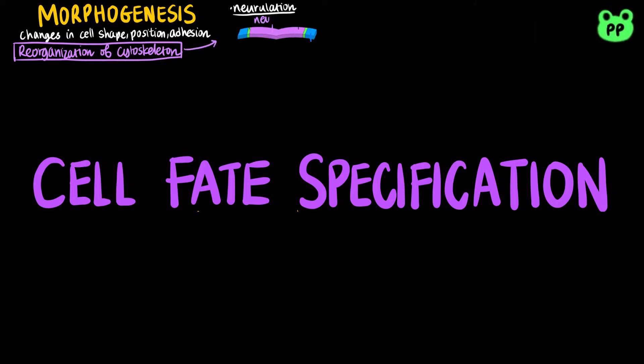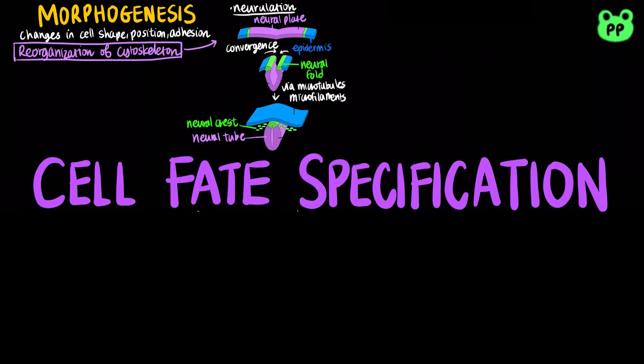First, microtubules help elongate the cells of the neural plate, and the actin filaments deform the cells into wedge shapes, forming the neural fold. Lastly, the neural plate pinches off and forms the neural tube. More details about neurulation have been covered in my last video about animal development.